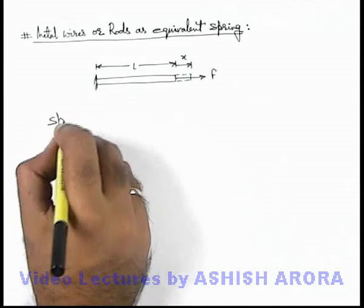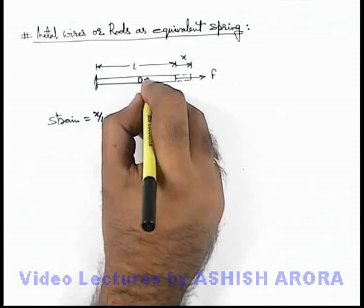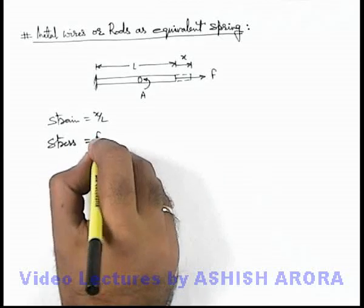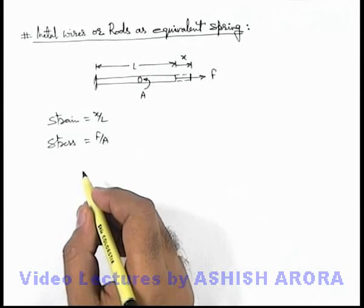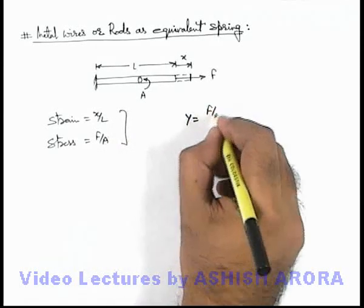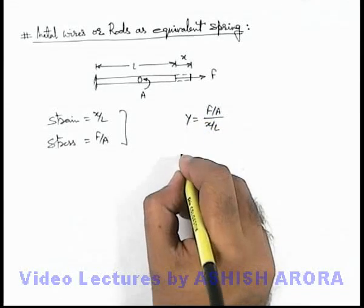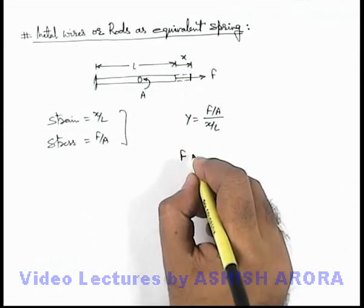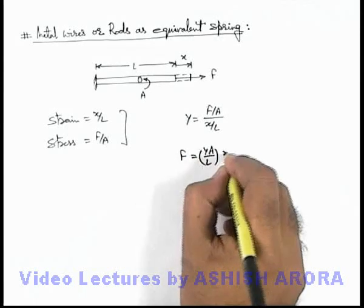In this situation, the strain produced will be x by L. And if the cross-sectional area of the rod is A, then the stress due to which the resulting strain is produced can be written as F by A, if the rod is in equilibrium. According to the definition of Young's modulus, we can write Y = (F/A) / (x/L), and rearranging, the external force balancing the internal restoring forces is F = (YA/L) × x.